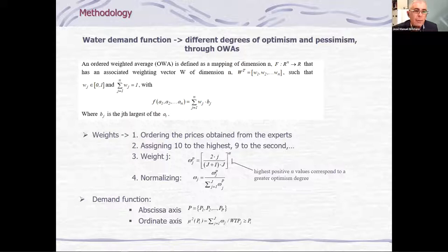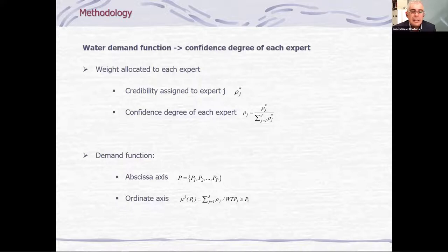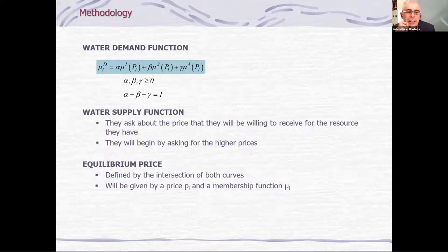With the third methodology, using the confidence degree, we only have to assign a credibility to an expert, and then convert this credibility into a value from zero to one, and ensure that all the weights sum one. The construction of the demand function is similar. As we have three demand functions, the membership of the aggregate function will be obtained as alpha multiplied by the membership for each price for the first methodology, plus beta for the membership of the second methodology, plus gamma for the membership function of the third methodology.